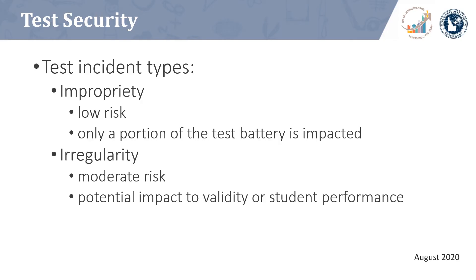There are two types of test incidents: an impropriety and an irregularity. Test improprieties include incidents that are low risk and impact only two or fewer subtests. Test irregularities include incidents that could possibly impact the validity, security, or outcome of the assessment; if more than two subtests are impacted, the incident is considered a test irregularity. Definitions for both types of test incidents are provided in Table 5 of the TAM along with the appropriate action a district should take. Districts should also refer to the Assessment Integrity Guide on the SDE Accountability website for additional information regarding test security.